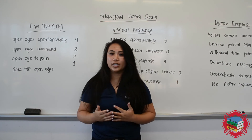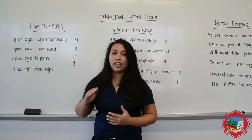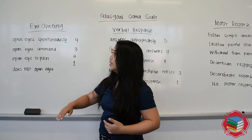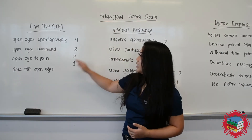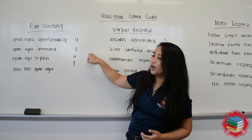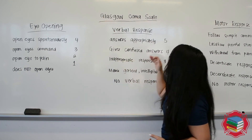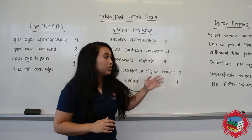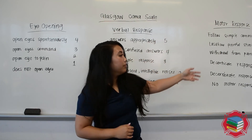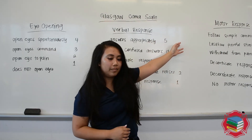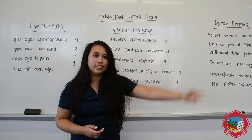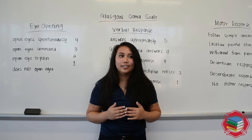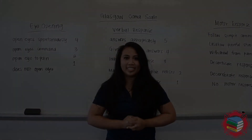For example, if your patient gets a 13, you're going to have to specify in each category what the score was. For example, eyes it's going to be a 3, so they only open on command. The verbal is going to be gives confused answers, so that's a 4. And then motor, follow simple commands, that's a 6 — so it equals 13. You're going to have to specify if your patient did not get a 15, why they did not get a 15.